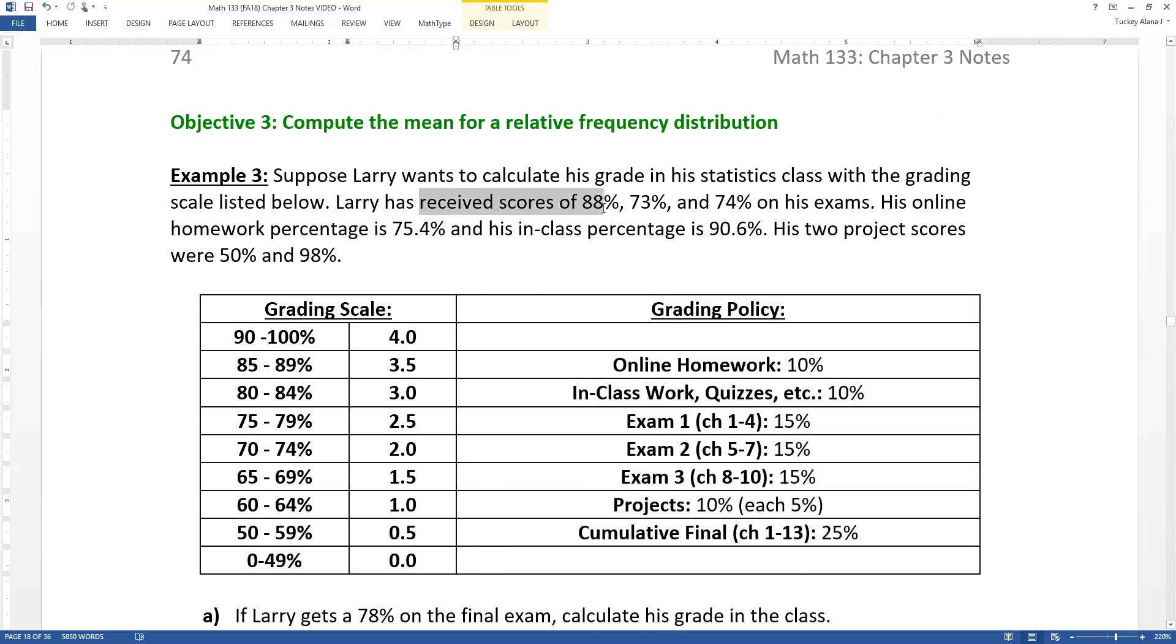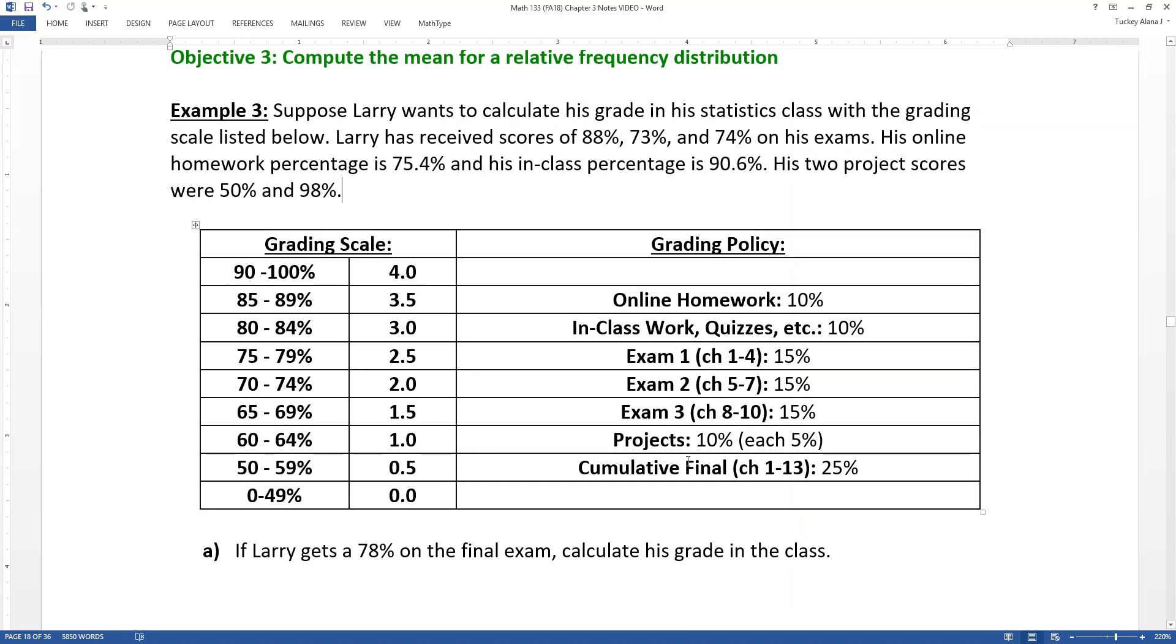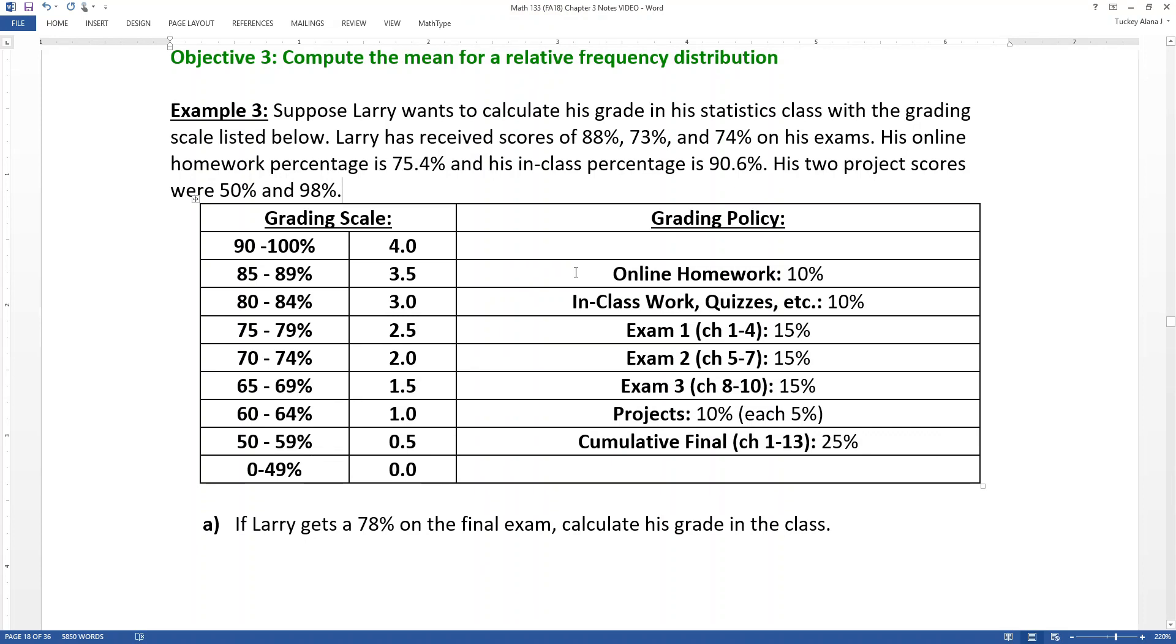He has received 88%, 73%, and 74% on his exams. His online homework, that would be the MyMathLab homework, is 75.4% and his in-class percentage is 90.6%. Now I have to tell you, this is actually a real student. I've changed the name to protect the innocent, but these are truly a student's scores from an in-class class I had many years ago. And just for the record, the projects are not each 10%, they're each 5% to make a total of 10%. Remember that these percentages should add up to 100%. If they didn't, then your instructor has done something majorly wrong.